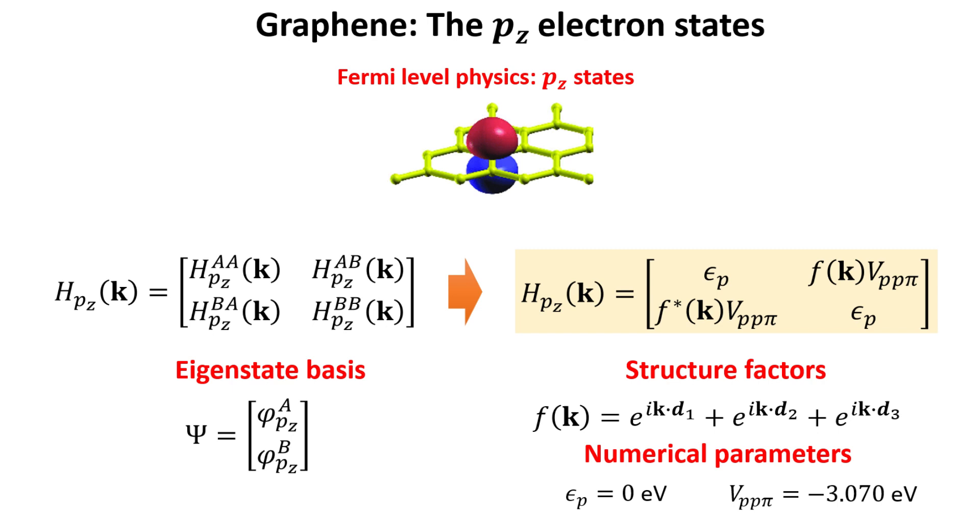We can pick the pz Hamiltonian elements from the total Hamiltonian matrix of graphene shown in the beginning of this video. These matrix elements were explicitly computed in a previous video.